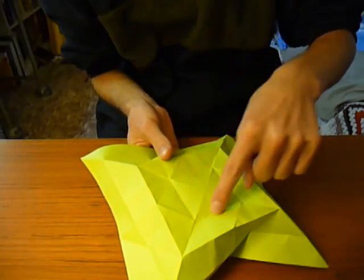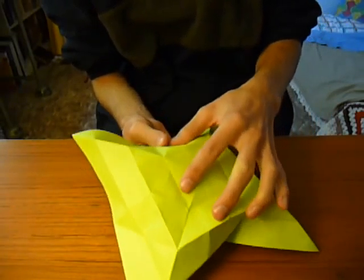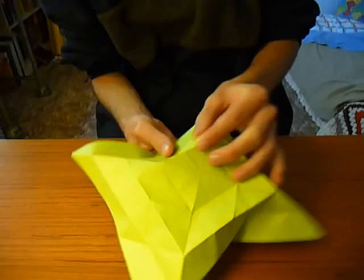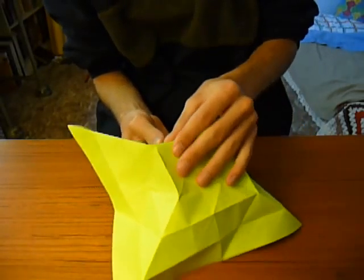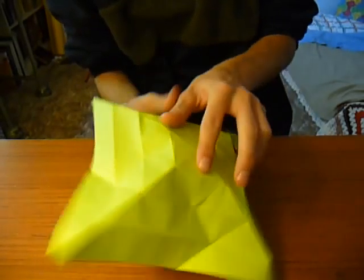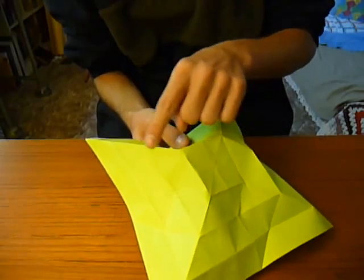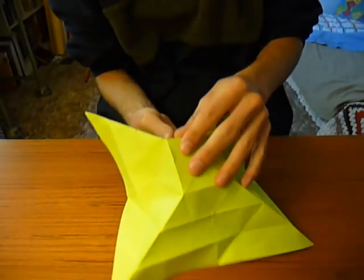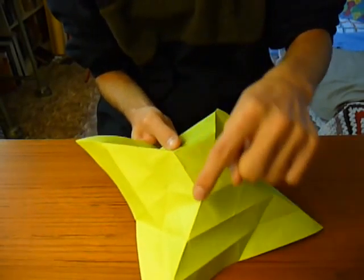And put mountain folds. These are all valley folds right now. We need to reverse them and turn them into mountain folds. So pinch them. And you'll notice this is also reversing the creases along the diagonals of the square, right along these corners.